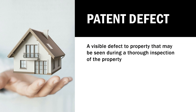P for patent defect. For letter L we talked about latent defects — here we're talking about patent defects. They're essentially opposites: with latent you can't see it through a visual inspection; with patent you can see it through a visual inspection of the property. For example, if you notice water in the basement seeping in through a crack, that's a patent defect. Or if you're inspecting the roof and notice some shingles are missing, that would also be classified as a patent defect.